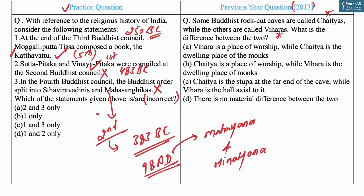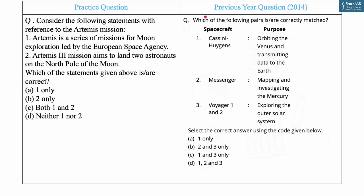Since we had to find the incorrect statements, the answer is option A — statements two and three only. The answer for the corresponding PYQ is B: Chaitya is a place of worship while Vihara is the dwelling place of monks. The next question is on space exploration, as UPSC has been asking questions on space missions and their objectives. In 2014 it asked about various spacecraft and their purposes. Today's question is based on the Artemis mission, which featured in today's newspaper.